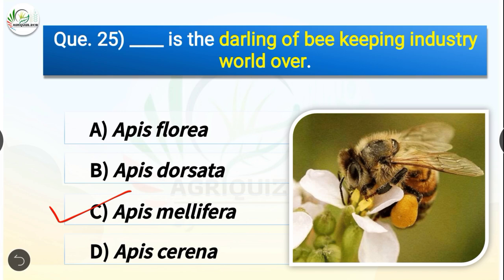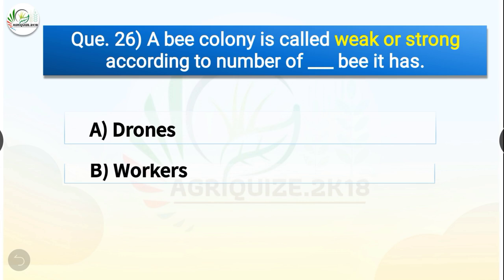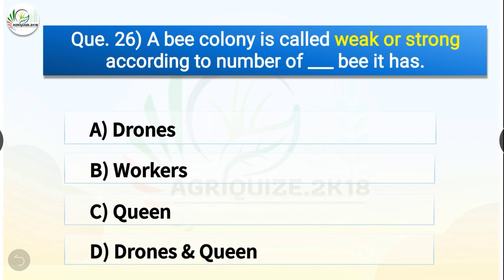Question number twenty-six: A bee colony is called weak or strong according to the number of dash bees it has. The options are drones, workers, queen, or drones and queen. The correct answer is option B — workers. A bee colony is called weak or strong according to the number of worker bees it has.